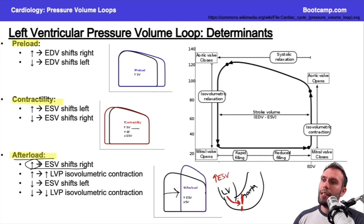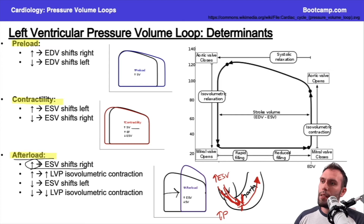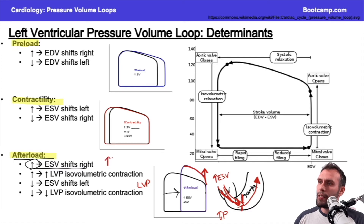Also notice that with increased afterload, the height of the curve increases. You're fighting a higher pressure leaving the left ventricle into the aorta. If there's stenosis or vasoconstriction, less blood can leave because of the higher pressure, increasing the end-systolic volume. Additionally, I need to generate a higher left ventricular pressure to exceed the aortic pressure and get blood out. So with increased afterload: the curve's height increases and the end-systolic volume increases.